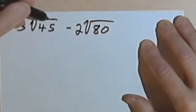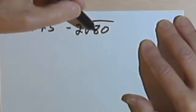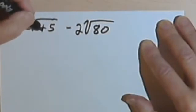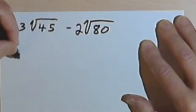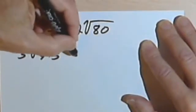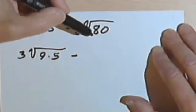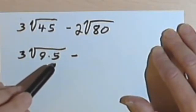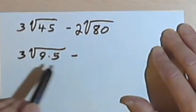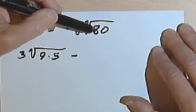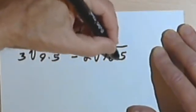Here we have 3 times the square root of 45 minus 2 times the square root of 80. We use the same procedure. I'm looking for two factors of 45 so that one of them is a perfect square. I realize I can divide 45 by 9, so I'll get 3 times the square root of 9 times 5. Looking at the square root of 80, I'm thinking since I'll be left with a 5 under a radical sign, if I could get a 5 here also I'd be able to add the two parts. So 5 goes into 80 sixteen times, and 16 is a perfect square. So let's rewrite this as 2 times the square root of 16 times 5.